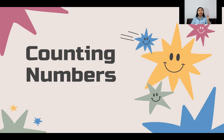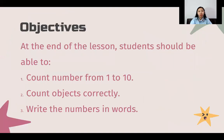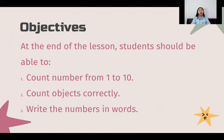Now today we are going to talk about counting numbers. Counting numbers are the numbers that you use for counting. For example, how many fingers do you have? 1, 2, 3, 4, 5, 6, 7, 8, 9, 10. We will count from 1 to 10, count some objects, and learn how to write the numbers into words.